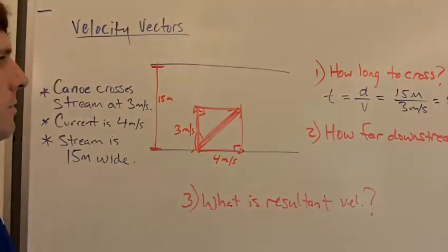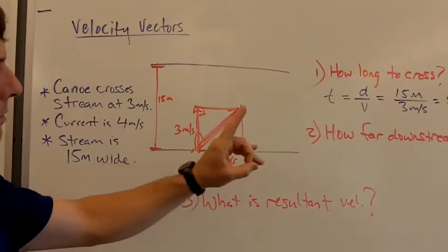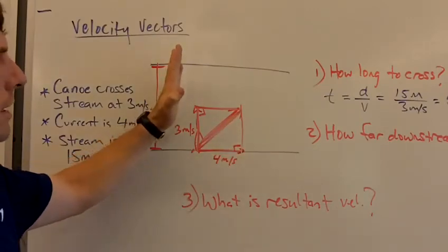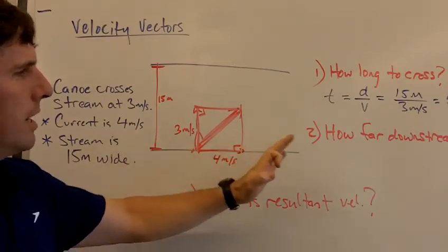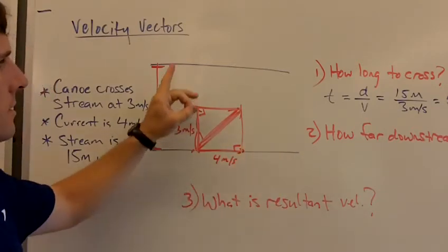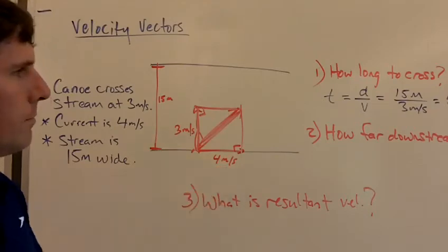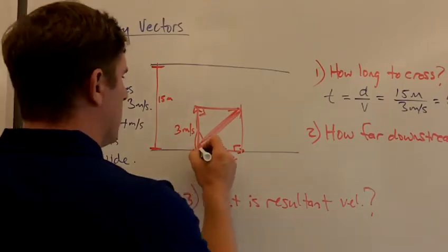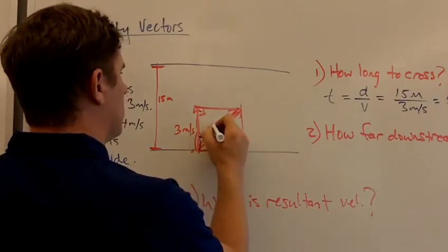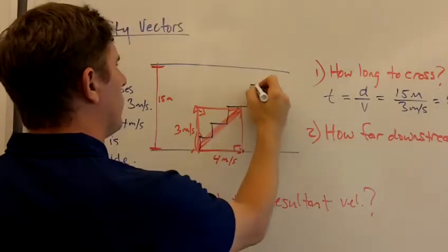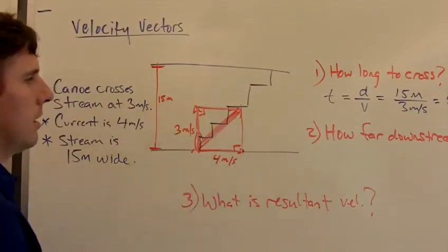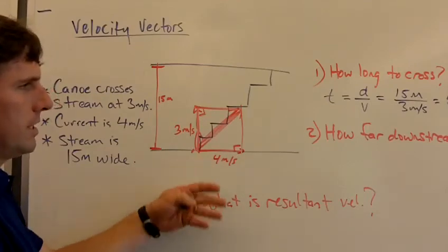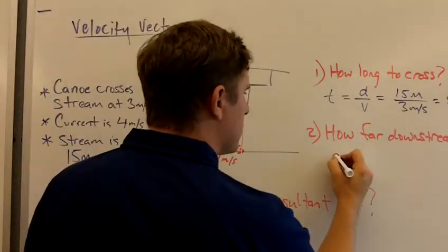How about how far downstream does this thing go? Well, now that we know how long it takes the canoe to get across the stream, we can try to figure out how far downstream it's going to go. And every second it's in the water, it's going to drift four meters downstream. So it's going to be something like this. One, two, three, four, five, like that.